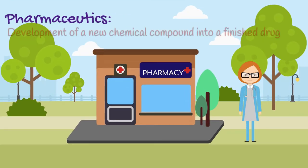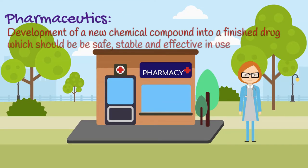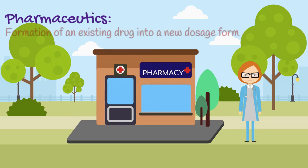The first branch of pharmacy is Pharmaceutics. It is the branch of pharmacy that deals with the development of a new chemical compound into a finished drug, which should be safe, stable, and effective in use. Pharmaceutics also deals with the formation of an existing drug into a new dosage form.